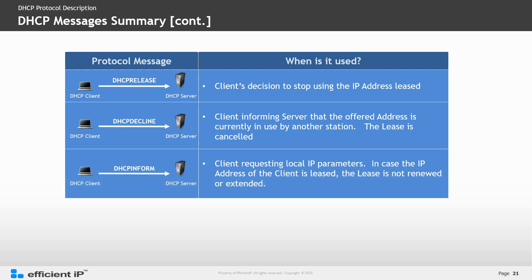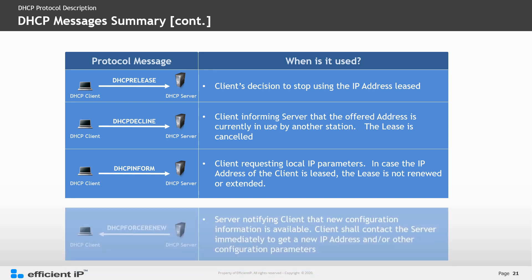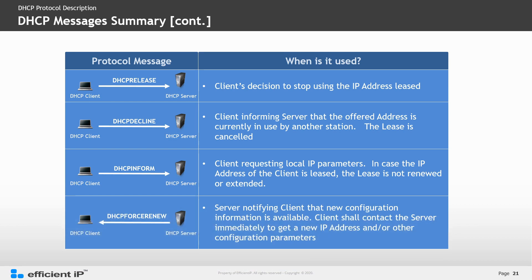DHCP Inform is used by the client to request local IP address parameters when it already has an IP address but the lease has not been renewed or extended. DHCP Force Renew is used by the server to notify the client that new configuration information is available, and the client should contact the server immediately to get an IP address and/or new configuration parameters.